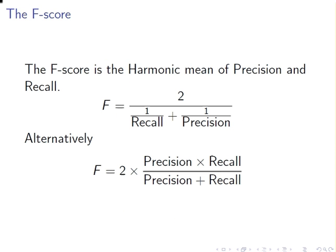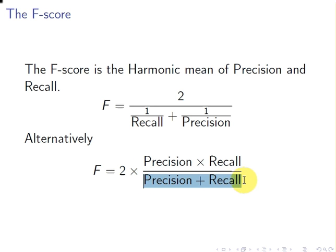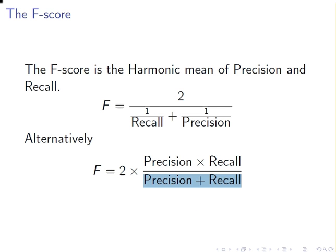The F-score is the harmonic mean of precision and recall. This is the conventional formula for the harmonic mean of two values, but it's probably easier to set it up as: two times precision times recall, divided by precision plus recall. So: precision times recall divided by precision plus recall, multiplied by two.